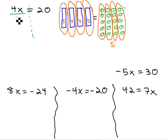If we have 4 x's, we need to divide them into 4 groups. If we divide one side by 4, we need to divide the other side into 4 groups as well.